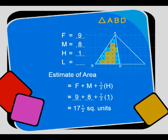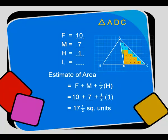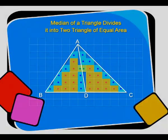The estimate of the area of triangle ABD is equal to 17 and a half square units, and the estimate of the area of triangle ADC also comes out to be 17 and a half square units. What do you observe? We have verified that a median of a triangle divides it into 2 triangles of equal area.